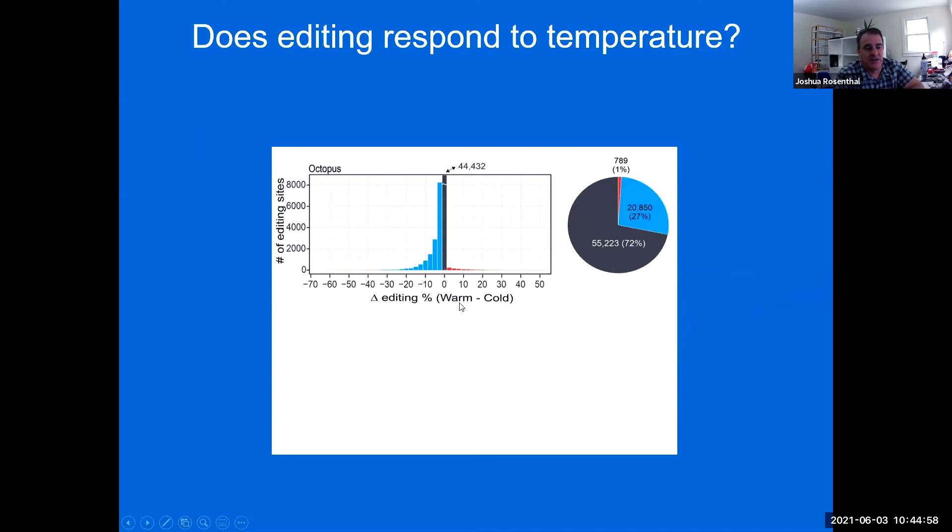And what we found was something interesting in that most of the sites didn't change. About three quarters of the sites didn't change here, but somewhere between a quarter and a third of the sites were temperature dependent. And in almost all cases, they were edited to a greater extent in the cold animals than in the warm animals. So here we have the editing percentage in the warm minus cold, and you can see it's very skewed such that the cold editing percentages are larger. There were a few cases where this was true for the warm animals, but in general, cold temperatures induced higher editing.